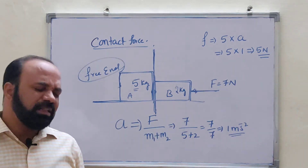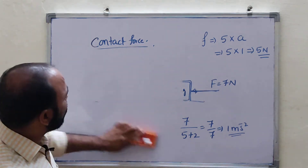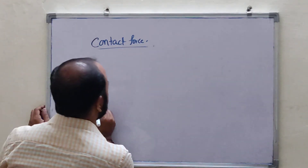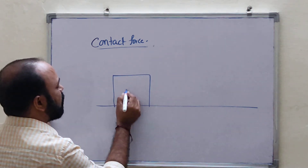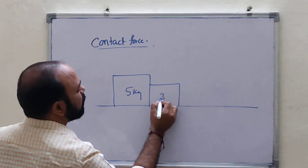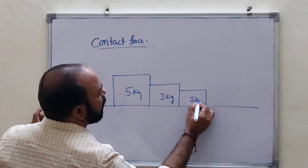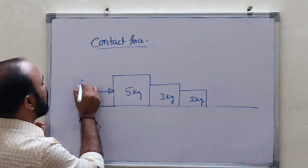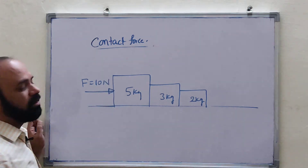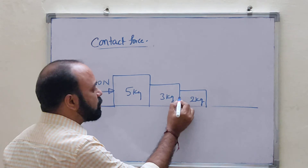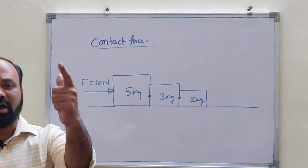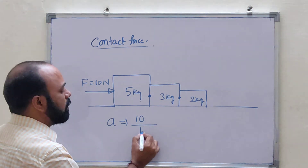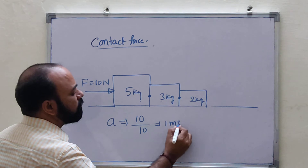Suppose more than 2 blocks are given — how to find the contact force? Let me explain one more problem. If the given blocks are more than 2: I have a 5 kg block, another 3 kg block, and another 2 kg block — three blocks total. I am applying a force of 10 Newton on the 5 kg block. Acceleration equals 10 divided by 5 plus 3 plus 2, which equals 10 divided by 10, equals 1 meter per second square.